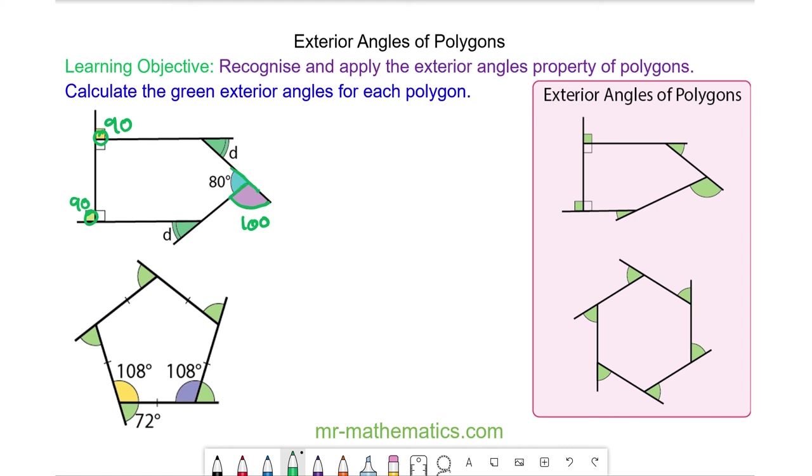So now we have 100 plus the 180, which is 280, plus the two d's must make 360. So 2d must be 80 degrees, so angle d will be 40 degrees.